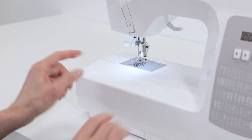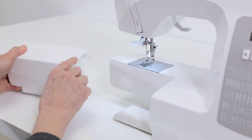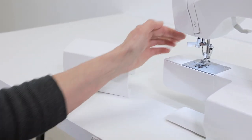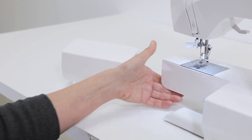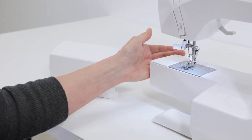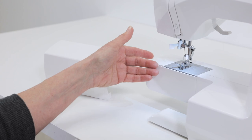This is your removable storage compartment, and you can slide it off the end of the machine to expose the free arm, which is great for when you want to hem things like trouser legs or sleeve cuffs, any small areas like that.